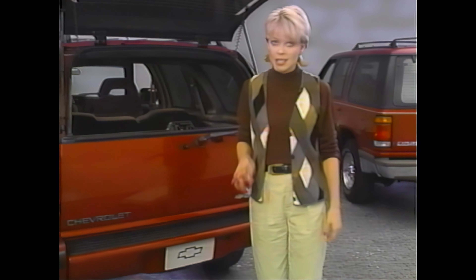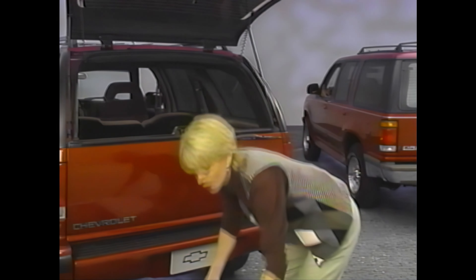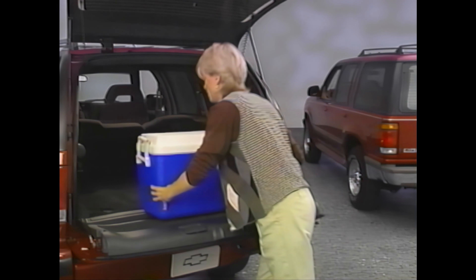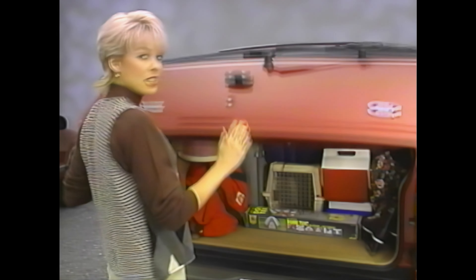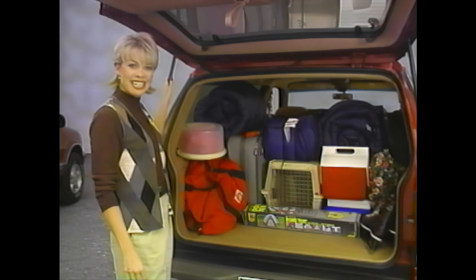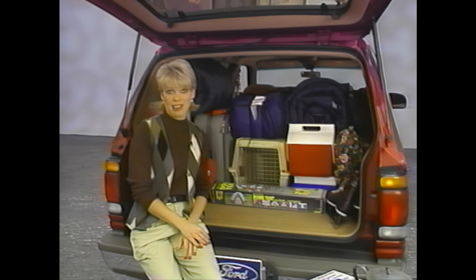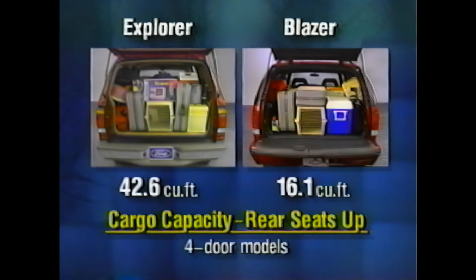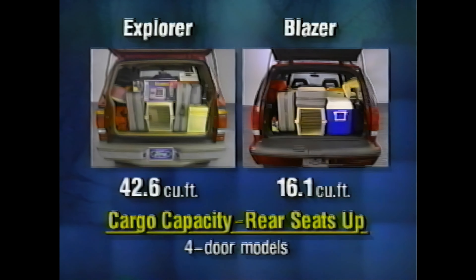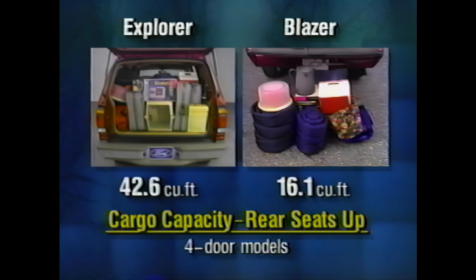Now let's look at cargo space, an important consideration for any sports utility buyer. Blazer's hatch is split, so heavy items either have to be lifted over the tailgate or lifted onto the tailgate and pushed in — which can be quite awkward. In contrast, Explorer's hatch flips up and out of the way, with lift struts tucked away for a neat, clean appearance. The four-door Explorer with rear seats down provides seven cubic feet of additional stowage space. With the rear seats up, the difference is even more startling: 42.6 cubic feet for Explorer versus 16.1 cubic feet for Blazer — meaning Explorer has 164% more cargo capacity than Blazer.